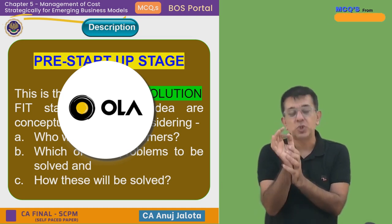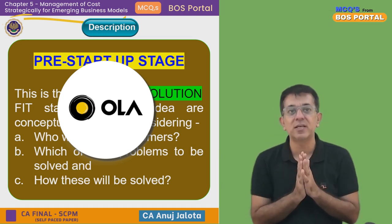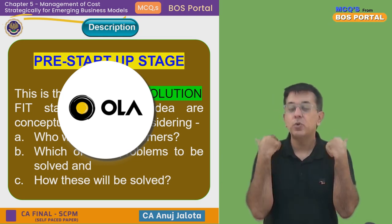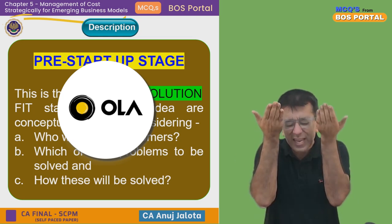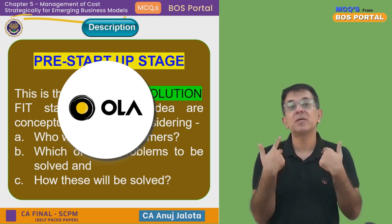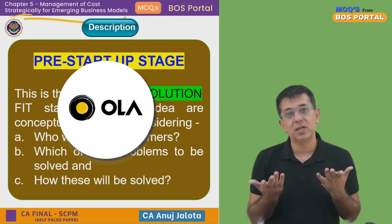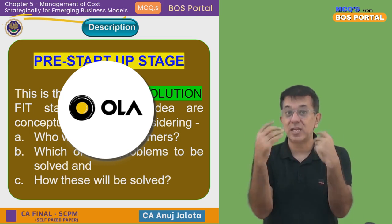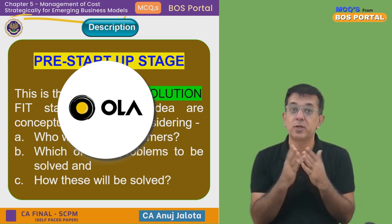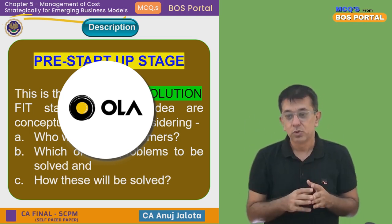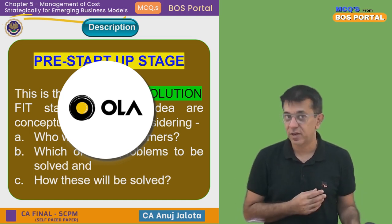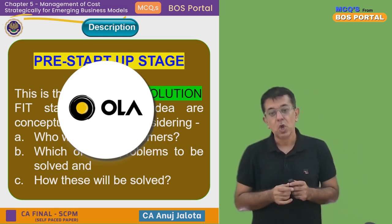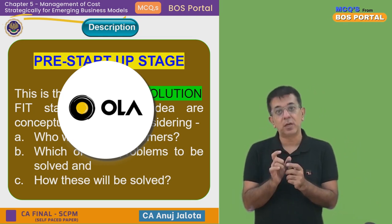This is the Problem Solution Fit stage — vision and ideas are conceptualized while considering: who will be the customers, what are their problems, what needs to be solved, and how it will get solved. Customers are people who wish to travel; their problem is they can't get a taxi, and if they do, the drivers charge any rate. The solution is standardization — knowing the rates in advance. This is the first stage of a startup trying to become a unicorn.